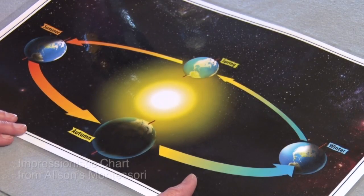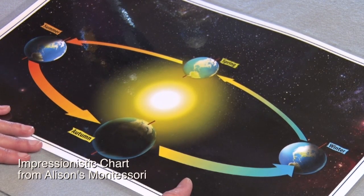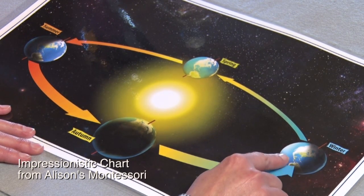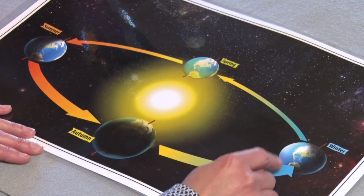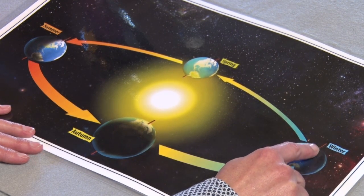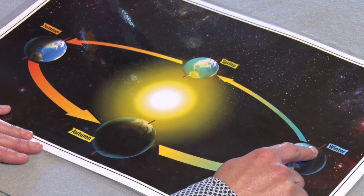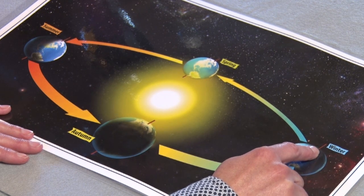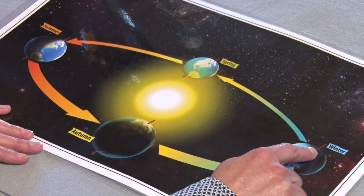If we look at this chart, it demonstrates the same thing we were just looking at with the globe. If we look over here, this is winter in the Northern Hemisphere, and the North Pole does not have sunlight. It does not have a sunrise or a sunset. It stays dark throughout the day and night.